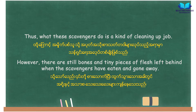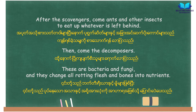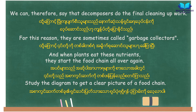However, there are still bones and tiny pieces of flesh left behind when the scavengers have eaten and gone away. After the scavengers come ants and other insects to eat up whatever is left behind. Then come the decomposers — these are bacteria and fungi — and they change all rotting flesh and bones into nutrients.